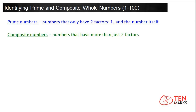Identifying prime and composite whole numbers between 1 and 100. Prime numbers are numbers that only have two factors: 1 and the number itself. Composite numbers are numbers that have more than two factors.